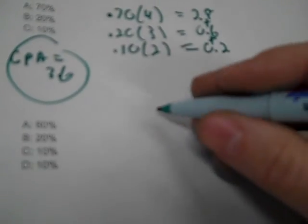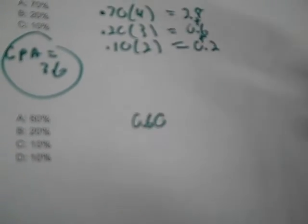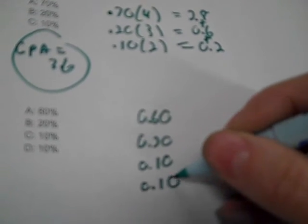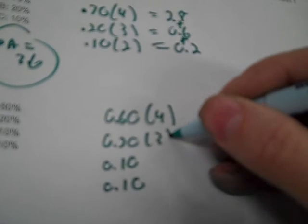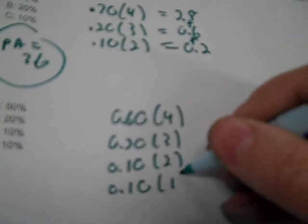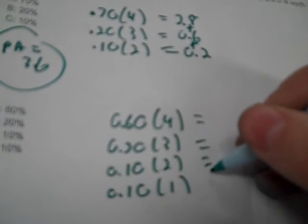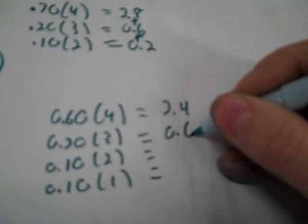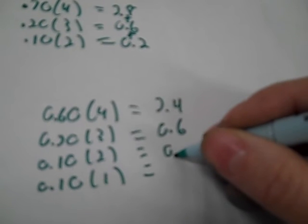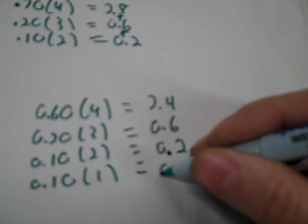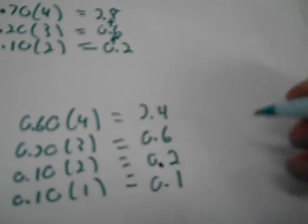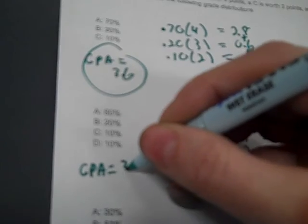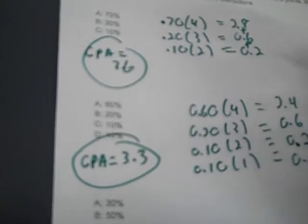Here, you got 60%, 0.60 or 0.6, 0.20, 0.10, or 0. And then, times 4, times 3, times 2, times 1. And F's don't even get calculated, because that's why they call it no credit. So, it's 2.4, 0.6, 0.2, and 0.1. Add those up, and that's going to be 3.3 is the GPA on that.